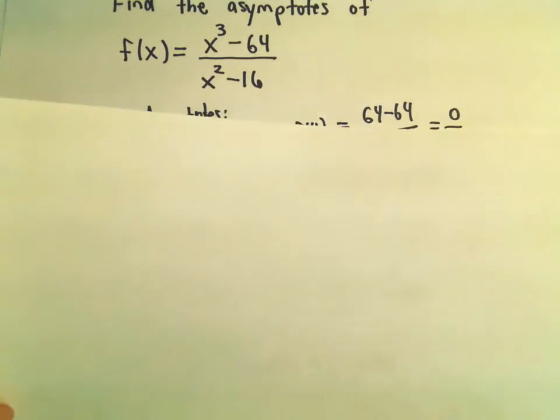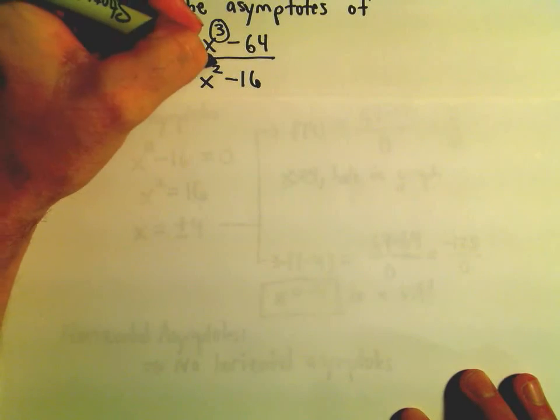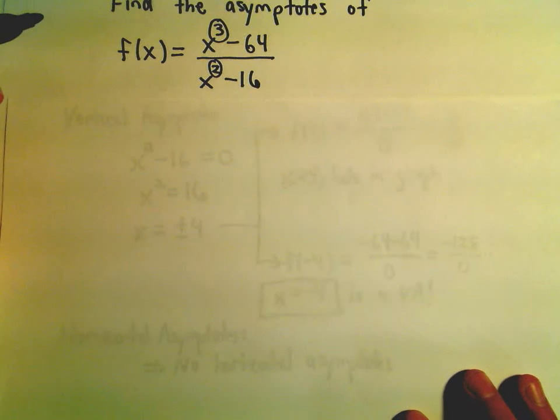However, remember, if the degree of the numerator is one larger than the denominator, there are oblique asymptotes.